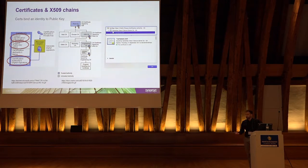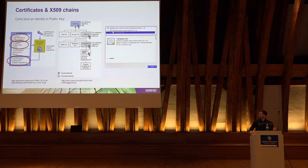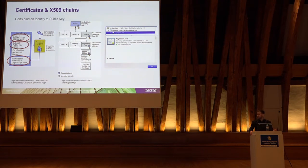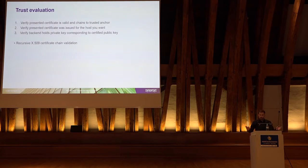A certificate is presented by the server. The server has a public-private key pair. The certificate basically binds the identity of the server to its public key — there's someone signing that blob, signing the subject which is the DNS name of the server and the public key, telling you this is authentic. That signing is done by an intermediate certificate authority, which is itself signed by a root certificate authority. The whole system works because every client — mobile application, operating system, browser — holds a trust store with around 150-200 root certificate authority certificates.